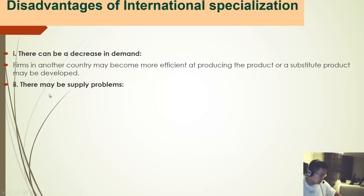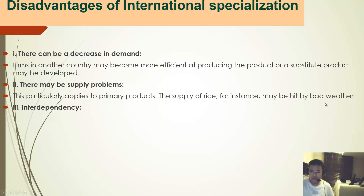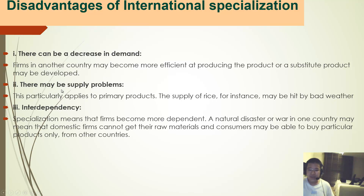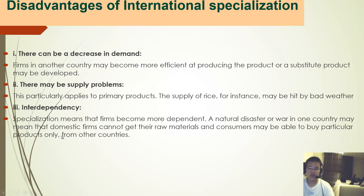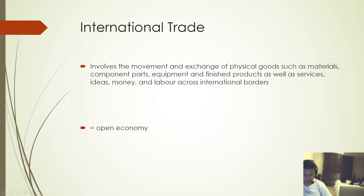However, there are some disadvantages of specialization. There can be a decrease in demand, as firms in other countries may become more efficient at producing the product, or substitute products may be developed. There may also be supply problems — for example, rice hit by bad weather. This links to interdependency: countries become increasingly dependent on one country producing a product, so a natural disaster or bad weather can prevent domestic firms from getting raw materials. Finally, there are trade restrictions.